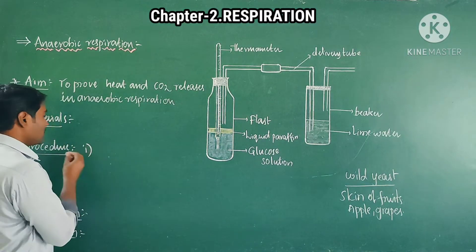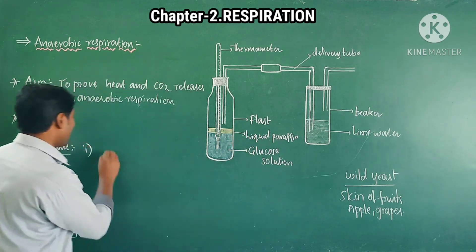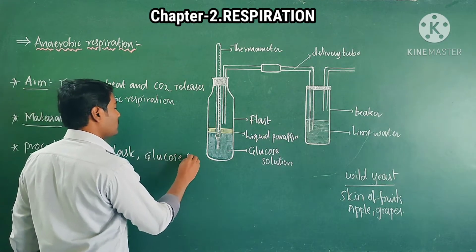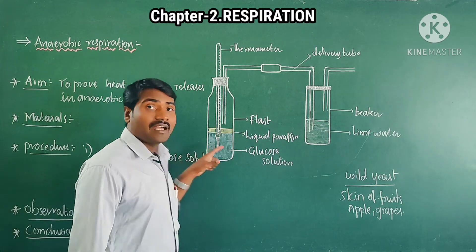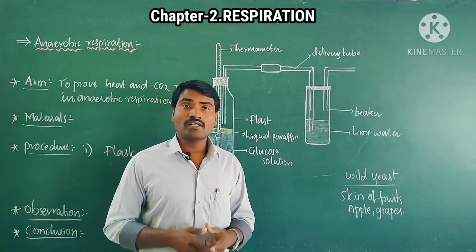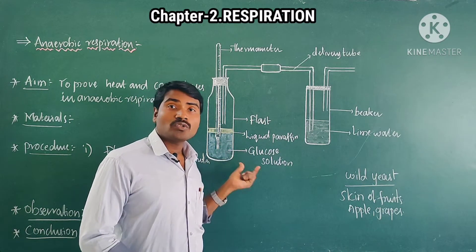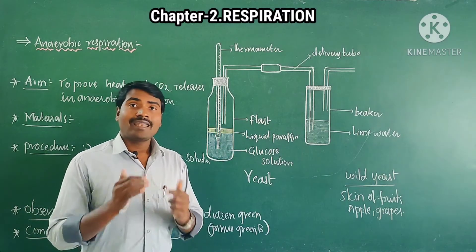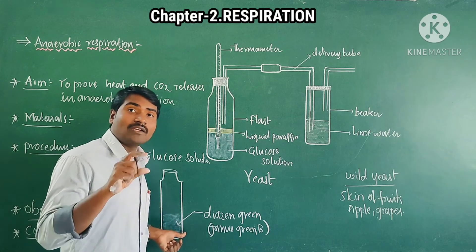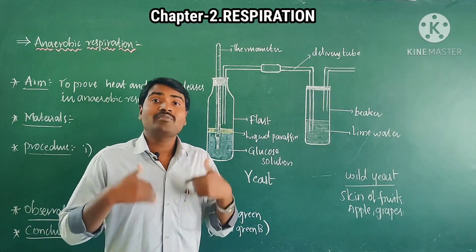For the procedure, first we have to take a conical flask. Into the flask we have to take glucose solution — at least 10 to 30 ml of glucose solution. So take about 20 ml of glucose solution in the flask.